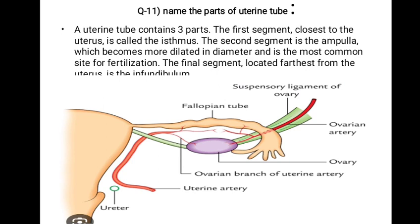Question number eleven: name the parts of the uterine tube. A uterine tube contains three parts: the first segment closest to the uterus is called the isthmus; the second segment is the ampulla, which becomes more dilated in diameter and is the most common site for fertilization; the final segment, located farthest from the uterus, is the infundibulum. A diagram is provided showing the fallopian tube, uterus, uterine artery, ovary, and ovarian artery.